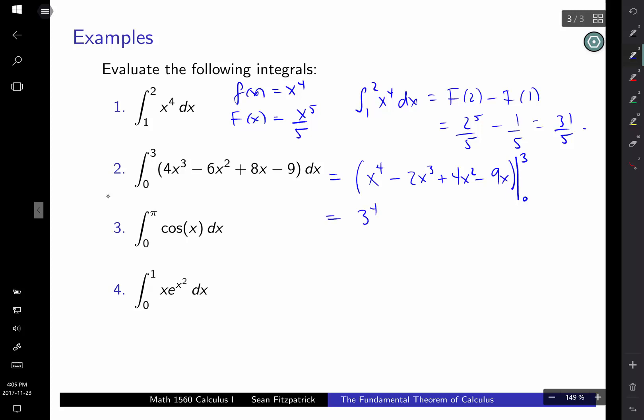So, we get 3 to the 4 minus 2 times 3 cubed minus 4 times 3 squared minus 9 times 3. So, that's the right endpoint minus the left endpoint. But when we plug in x equals 0, we just get 0. And if you wanted to, you could simplify all those numbers. But, I'm going to leave it at that. You can clean it up if you are so inclined. Actually it's not so bad. Well, let's leave it at that.